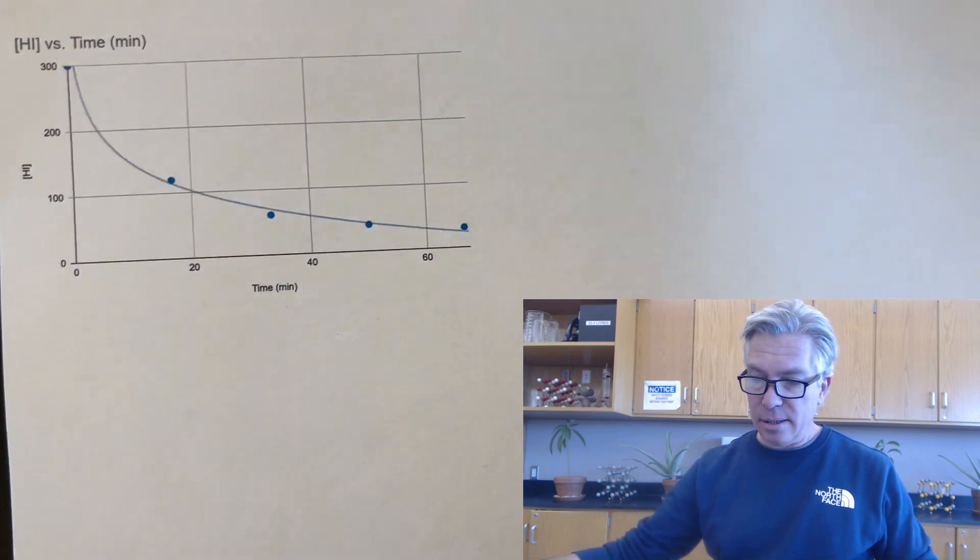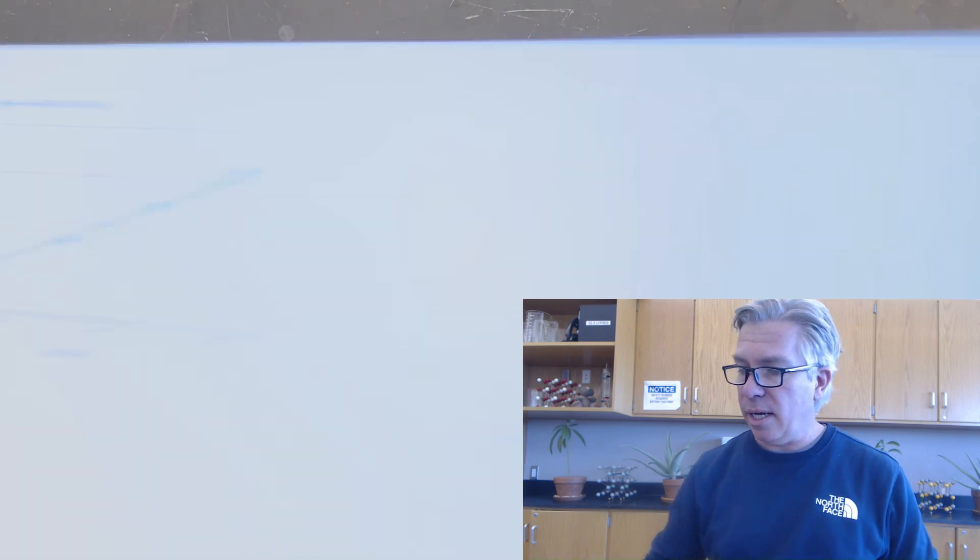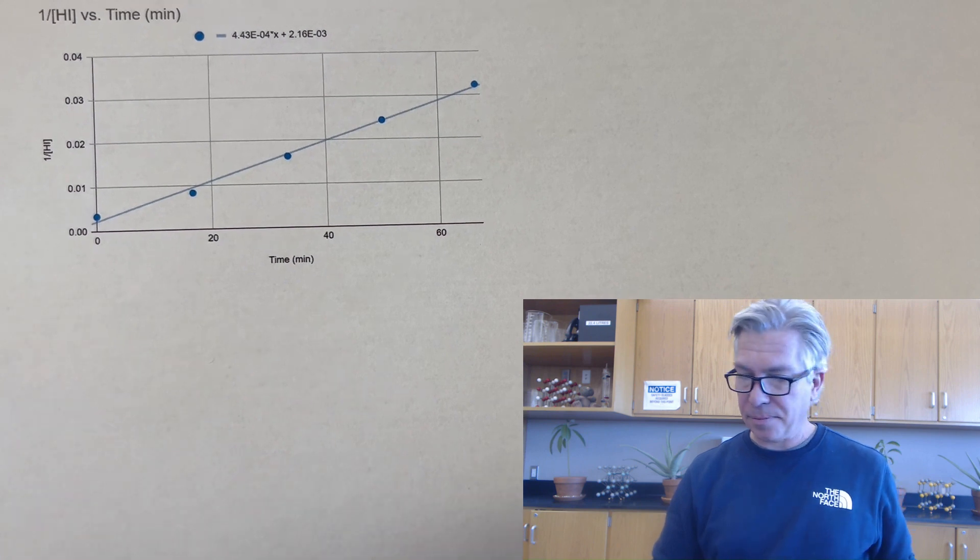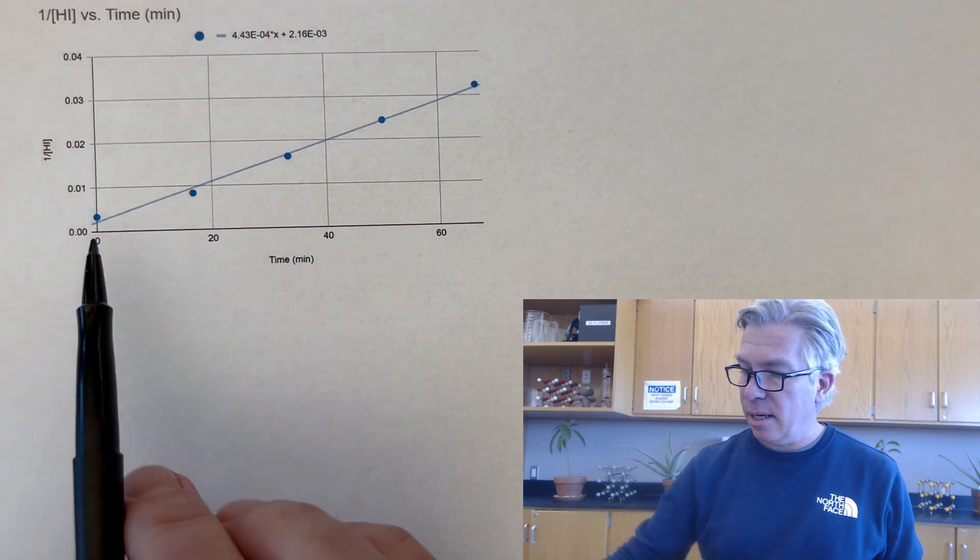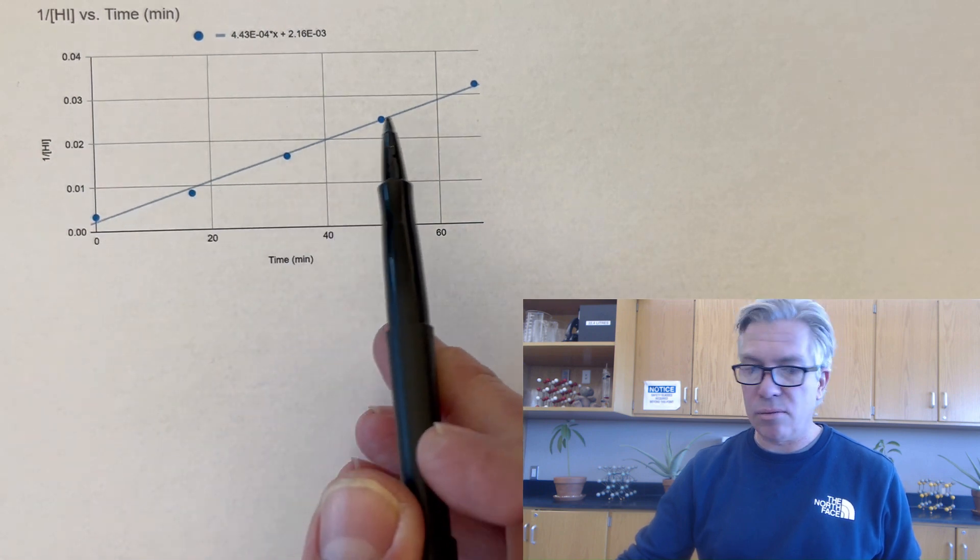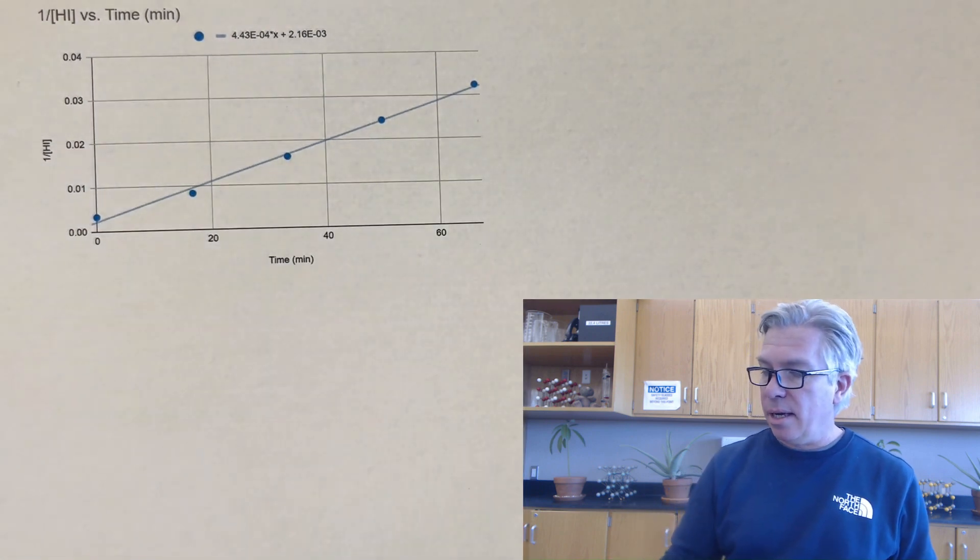So then I went ahead and made a column for the inverse of the HI concentration. And when I did that, I got this. This is very nearly a straight line. And that's great. It's pretty good data. And I like that.